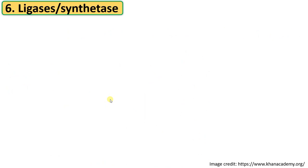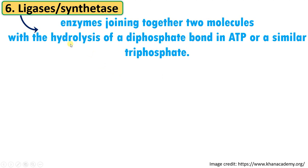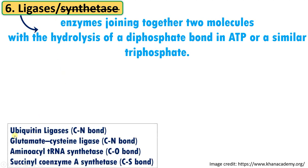The final class is called ligases or synthetase. These are enzymes involved in joining together two molecules with the hydrolysis of a diphosphate bond in ATP or a similar triphosphate. The term synthetase is now not used — as per the nomenclature committee, the term synthetase should be avoided; it was used earlier. Now all such enzymes are called ligases. Examples include ubiquitin ligases that join C-N bonds, glutamate-cysteine ligase, aminoacyl-tRNA synthetase, and succinyl coenzyme synthetase.